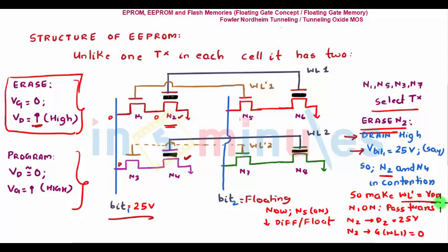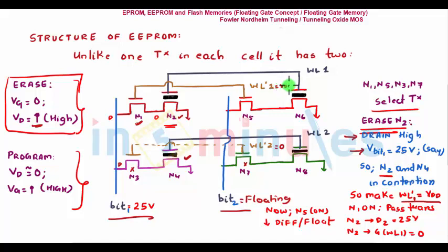Then we make word line prime 1 equal to Vdd, because we want to erase N2. That means word line prime 2 = 0, so select transistor N3 is off, and N7 is also off. But we are not considering the second column because bit 2 is floating. N1 is on because word line prime 1 is high. This is a pass transistor, so drain gets 25 volts. Word line 1 is 0, and since the select transistor is on, the gate voltage of the floating gate is 0, drain is 25 — exactly what we want. So erasing happens only at N2.